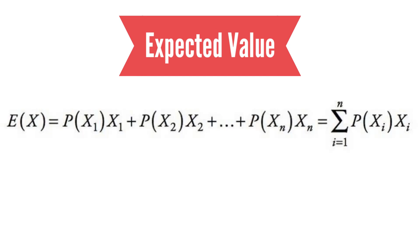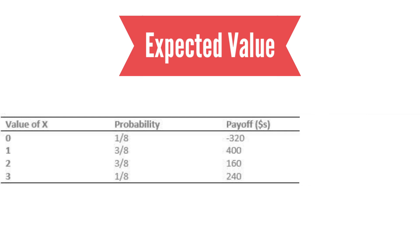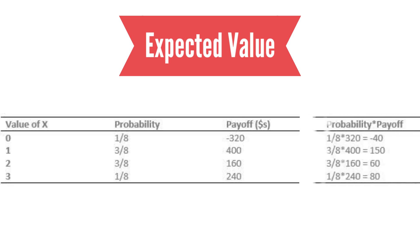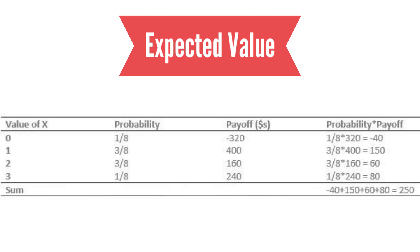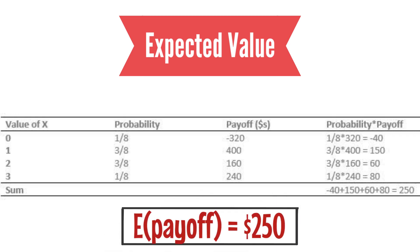Now let's introduce the concept of expected value. The expected value of a random variable is a probability-weighted average of all possible outcomes. Continuing our example of X — the number of heads after three flips — let's list all possible outcomes and the payoffs associated with each. We weight the payoffs with the associated probabilities, then add all probability-weighted outcomes to get the expected payoff of $250.